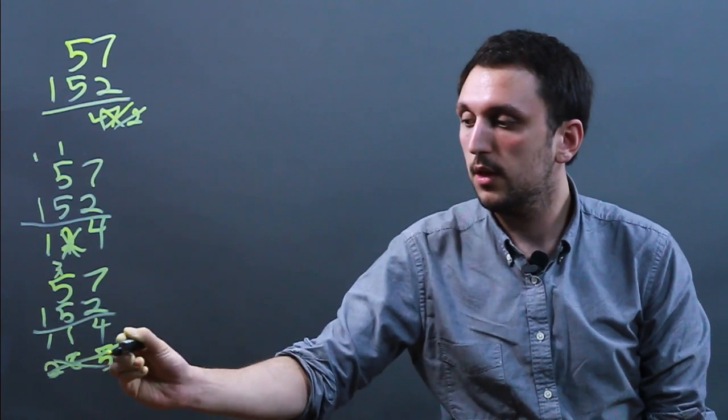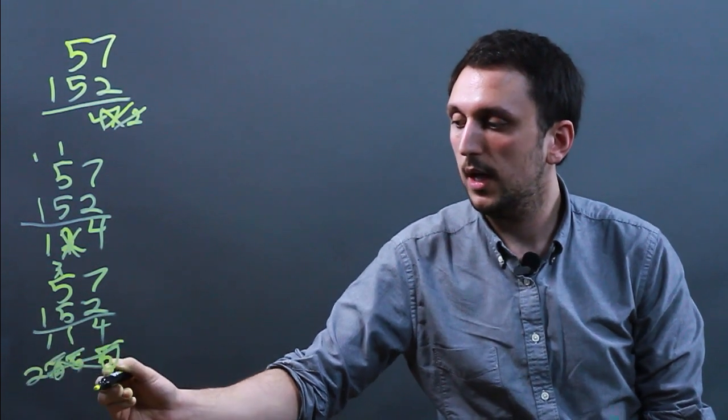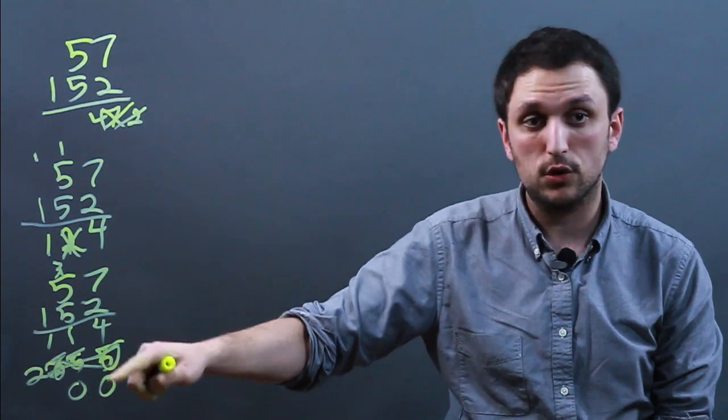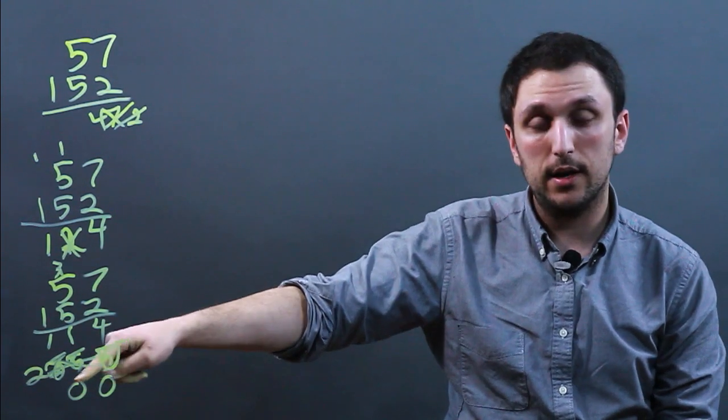The same thing would go for the third line. This one should be a 0, then 2850. And then this should be 00. So make sure you carry and make sure you remember your 0s. For each additional line, you add another 0.